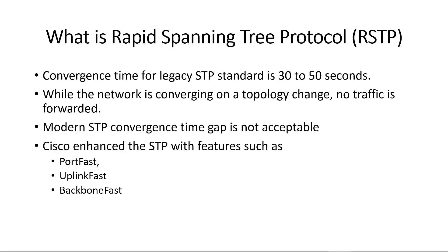So what is Rapid Spanning Tree Protocol, also known as RSTP? One of the first things you have to realize is with traditional STP, convergence time is normally between 30 and 50 seconds. And while the network is converging, no traffic is being forwarded. So in the modern day network, this type of time gap is not acceptable.